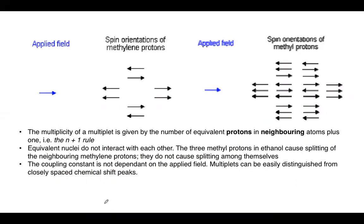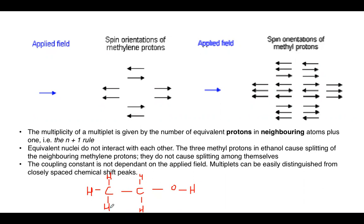In ethanol (CH₃-CH₂-OH), there are two protons on the methylene carbon and three protons on the terminal methyl carbon. Protons attached to the same carbon are equivalent. Protons attached to an adjacent carbon are non-equivalent and will cause splitting. The three methyl protons cause splitting of the neighboring methylene protons. These two methylene protons will be split by three protons, so N+1: three plus one is four — we expect a quartet.